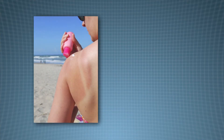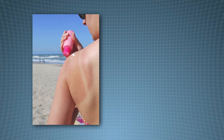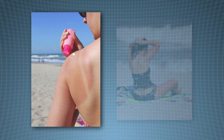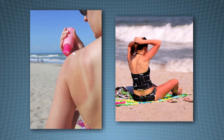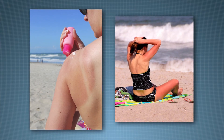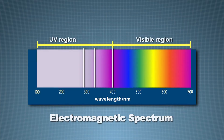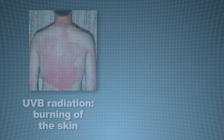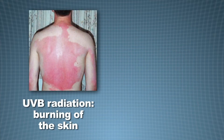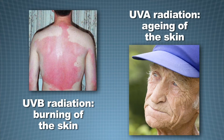So why do we need sun creams? Although our skin has some natural protection against the sun, specific types of radiation produced by the sun can be very damaging to our skin, so we need some extra help. The main type of damaging radiation is ultraviolet or UV radiation. There are different types of UV radiation. UVB is linked to the burning of the skin, and UVA causes the ageing of the skin. Both UVA and UVB have been linked to skin cancer.